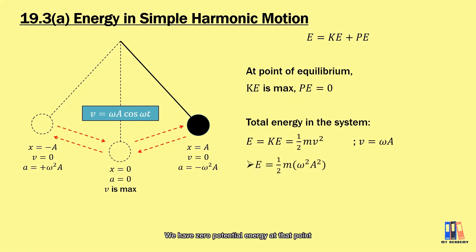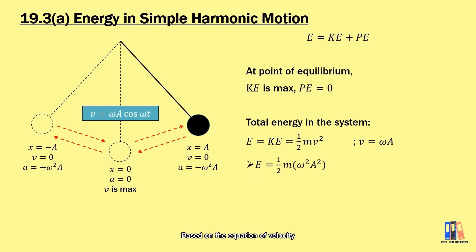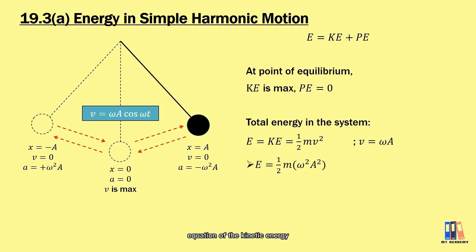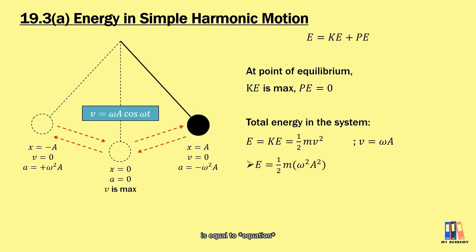At the equilibrium point we have zero potential energy, so the total energy equals the kinetic energy, given by the formula ½mv². Based on the velocity expression, the maximum velocity is ωa. Substituting into the kinetic energy formula, we obtain that the total energy in the system is equal to ½mω²a².